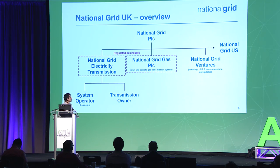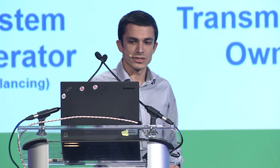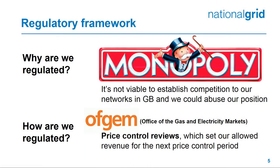On the UK side, we've got three businesses: electricity transmission, gas, and the ventures part, which is an unregulated part of the business responsible for metering, LNG — liquefied natural gas — and the interconnectors. I'm going to talk about the regulated businesses: electricity transmission and gas transmission. We're a monopoly business — the only electricity transmission business in the country, funded by the bill payer. Transmission networks are considered critical national infrastructure.